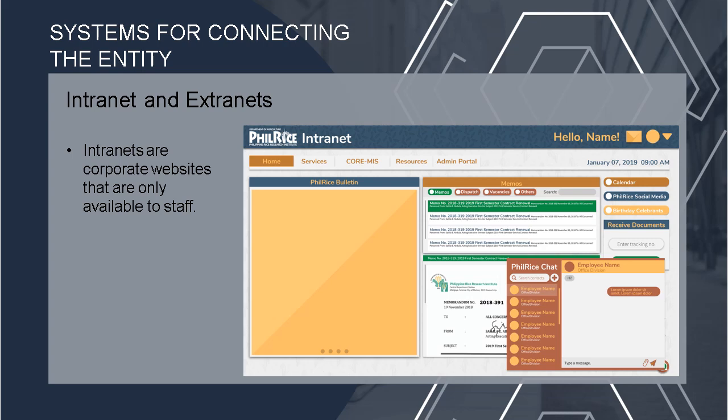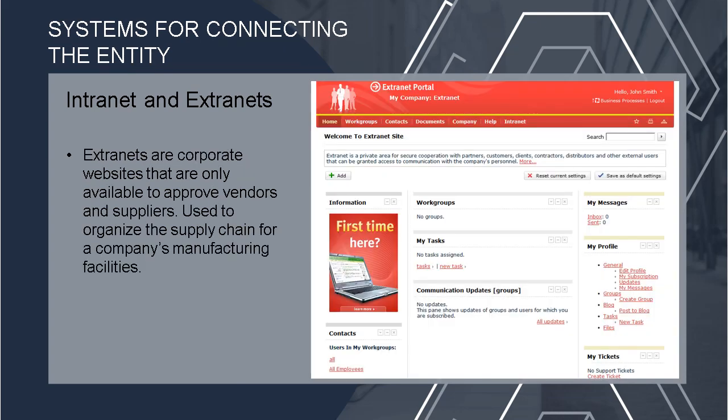Intranet and Extranet. Intranets are corporate websites that are only available to staff — you can email or chat with other departments and communicate through the intranet instead of going to the office. Extranets are corporate websites that are only available to approved vendors and suppliers, used to organize the supply chain for a company's manufacturing facilities. Through the extranet, you can communicate with vendors and suppliers, and it also serves as a history and basis for reordering.